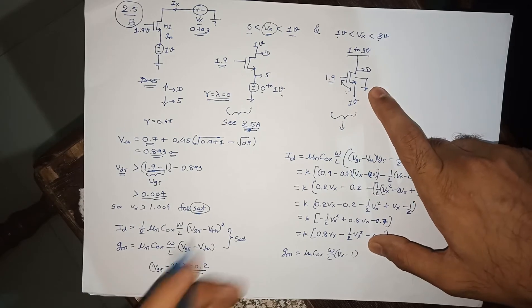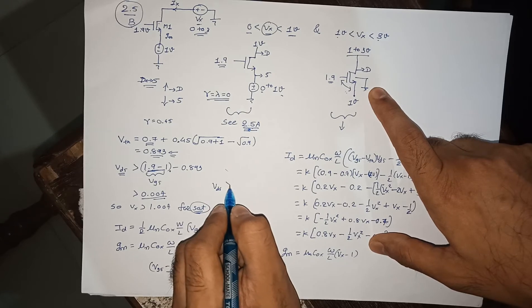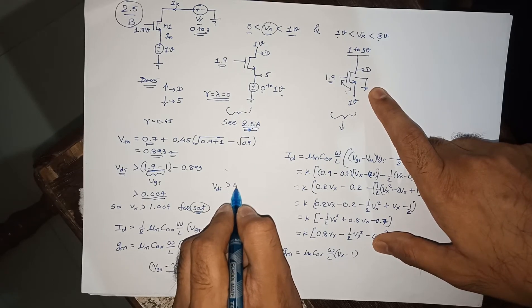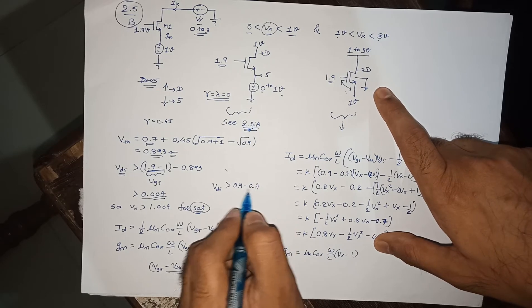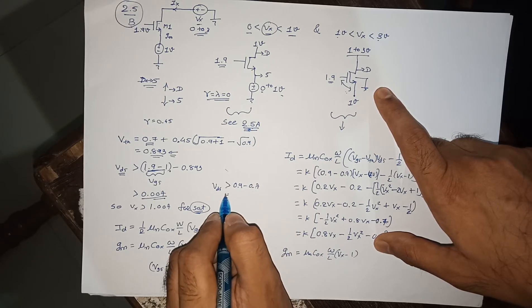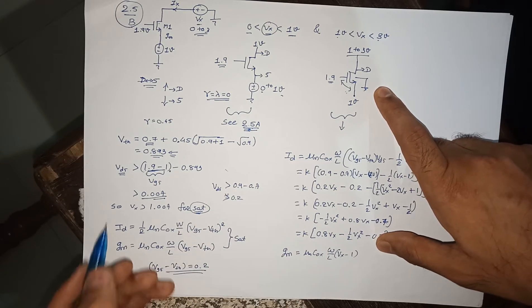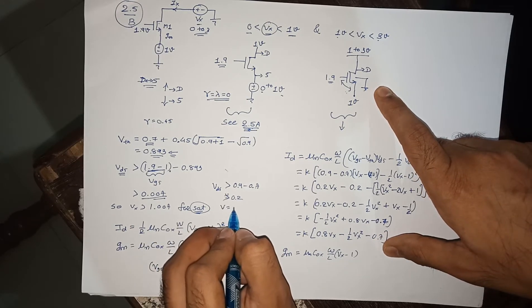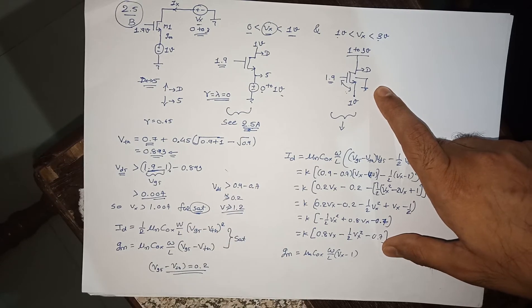If you are neglecting this body effect, your VDS should be greater than 0.9 minus 0.7, which is 0.2. So it is greater than 0.2. If your VDS is greater than 0.2, your device will be in saturation, and ultimately your VX will be greater than 1.2 for device in saturation.